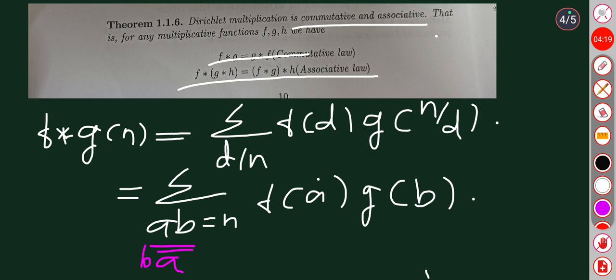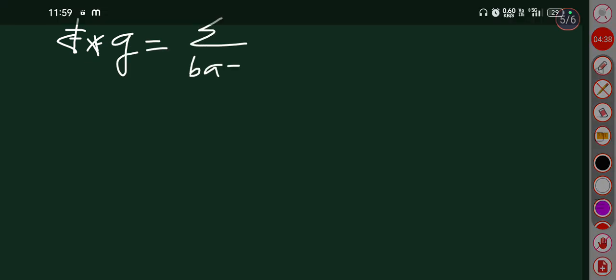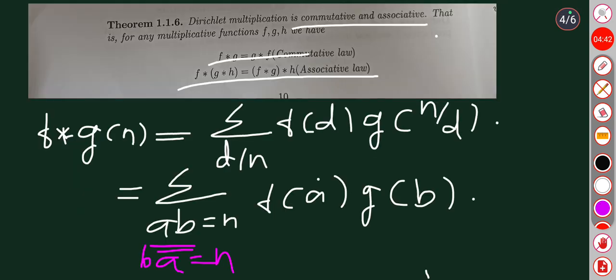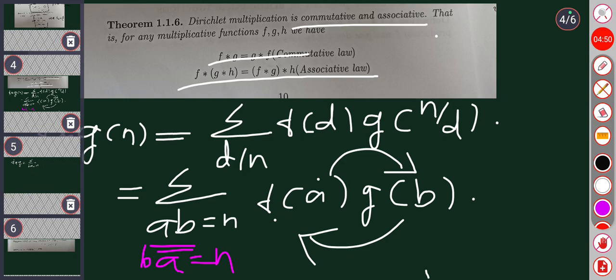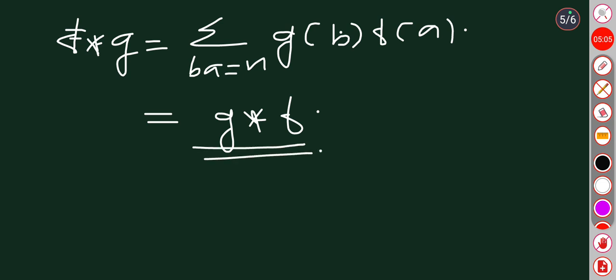If we substitute b a equals n, this becomes the summation over ba equals n of g of b times f of a, which equals g star f of n. So the result becomes commutative, and commutativity is proved.